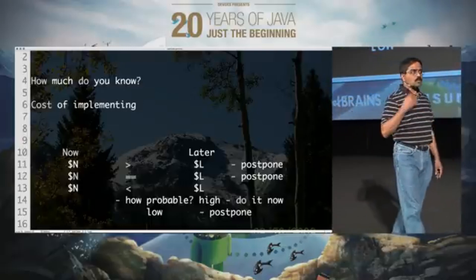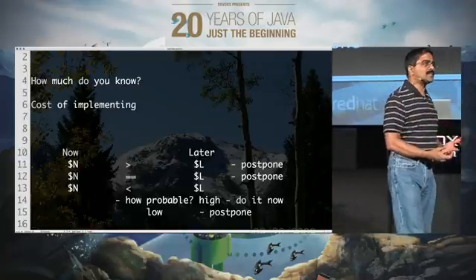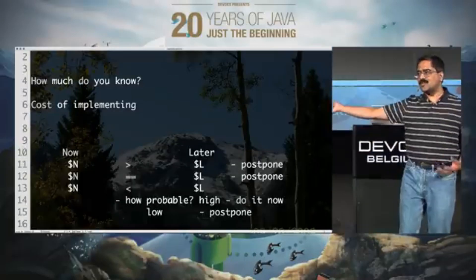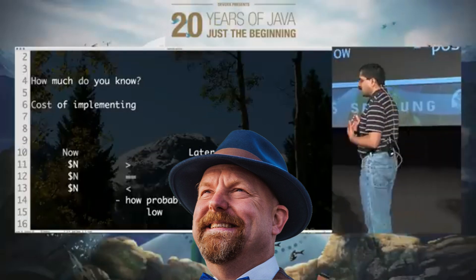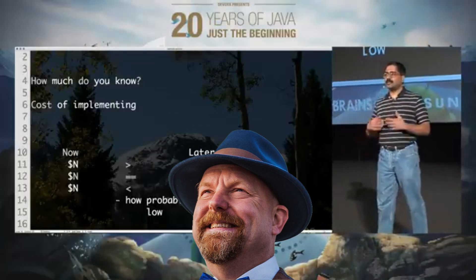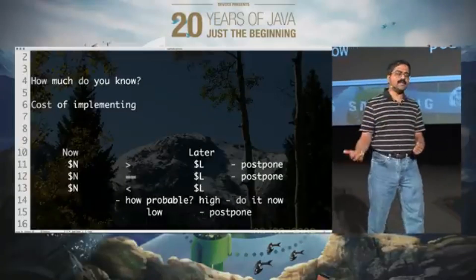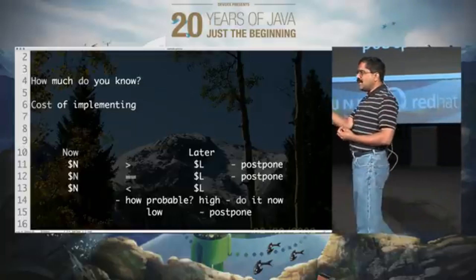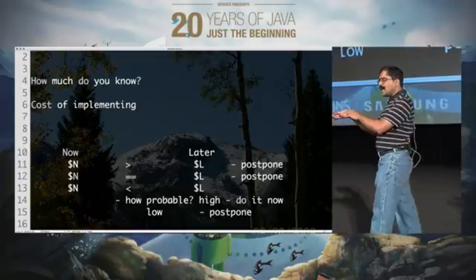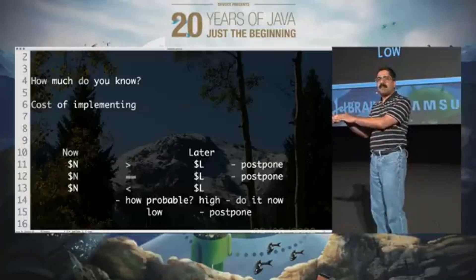Don't misunderstand postponing as procrastination. Procrastination is not doing something that should have been done yesterday. Kent Beck says courage is postponing the decisions of tomorrow to tomorrow. We need to have the courage to postpone things and say: if I wait a little longer, I'll get more visibility into this design. When I come back and address this design tomorrow, I can do a better job than I could today. So postpone it until you come back to it.